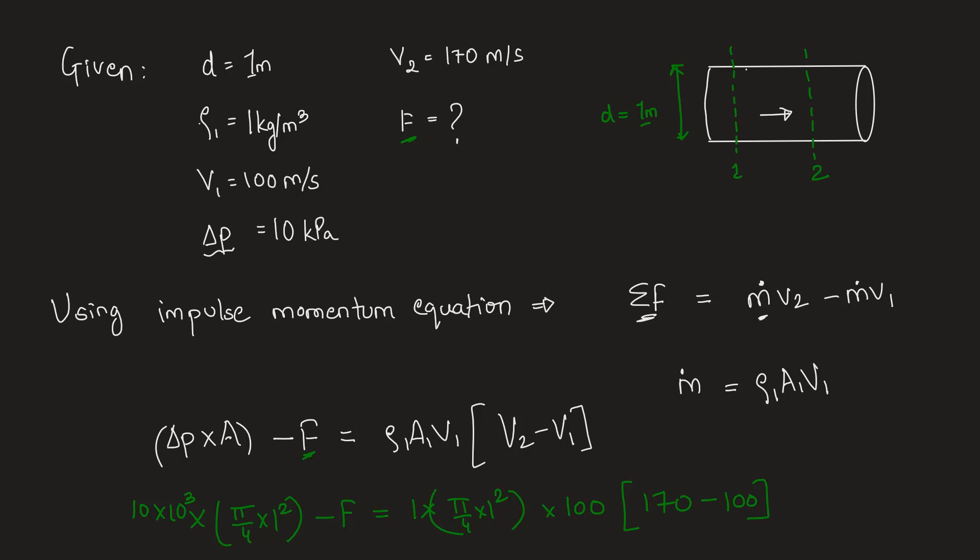Rearranging this we will get the value of F as 750 pi. We keep pi as it is because in the options the answer is given as a coefficient of pi. Pi is kept as it is. So pay attention on the options as well. Mark accordingly. Let's go back and mark this one.